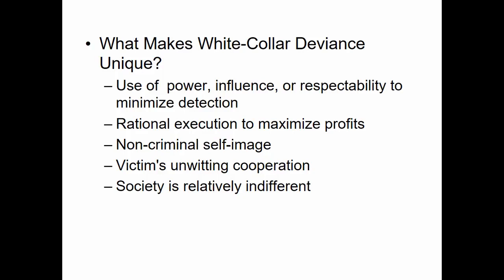The third thing that makes white-collar deviance unique is a non-criminal self-image. The white-collar criminal often does not think of themselves as being a criminal — they think they've been wronged by the company, so they need to take some money, but they're not a criminal. Fourth is the victim's unwitting cooperation: in white-collar crime, victims often go along with it. They might sign a form because someone tells them to, and when that form is signed, it results in a lot of money being stolen from them.